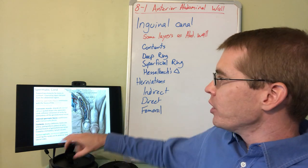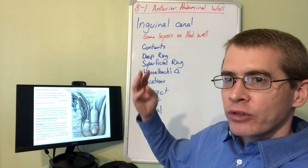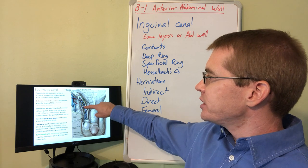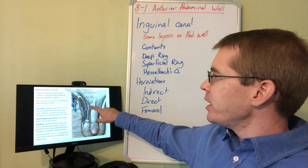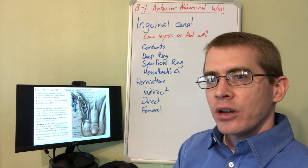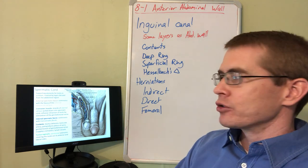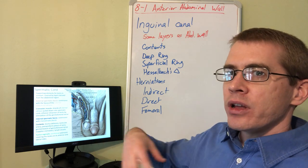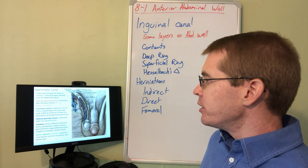Within the spermatic cord, we see a number of contents: the ductus deferens, through which sperm travel from the epididymis; the testicular artery; and the pampiniform plexus of veins. We also see the genital branch of the genitofemoral nerve, which innervates the cremaster muscle and causes it to contract. Finally, the tunica vaginalis covers the epididymis and testicle with its two layers.